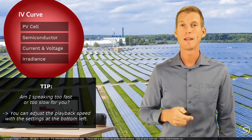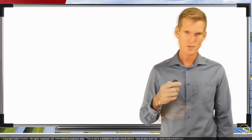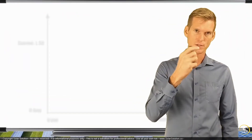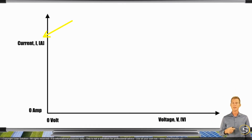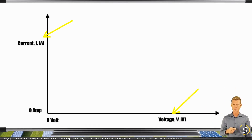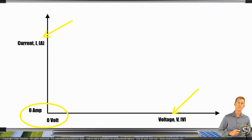Let's go to the whiteboard. On the vertical axis, the IV curve normally displays the current — the amperage being produced by the photovoltaic cell. On the horizontal axis, we always have the voltage. It starts at zero, and the further to the right you are, the higher the voltage. The same is true for the current: starting at zero, the further up you are, the higher the amperage.